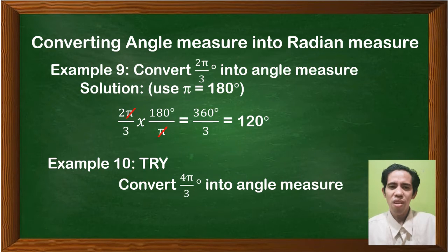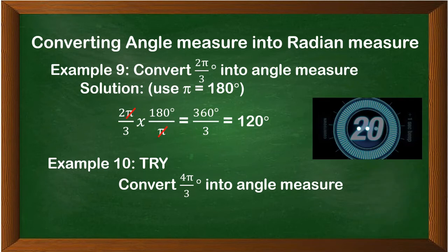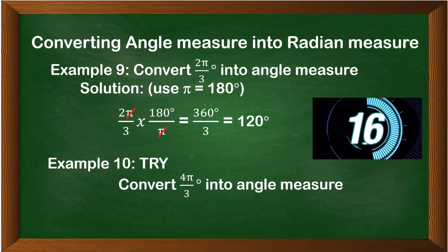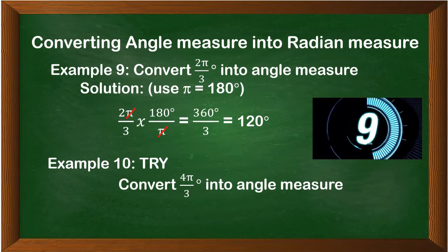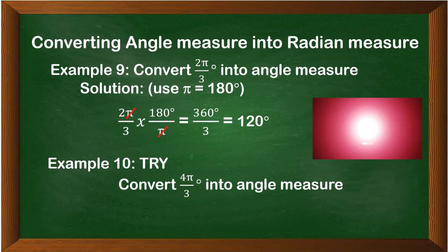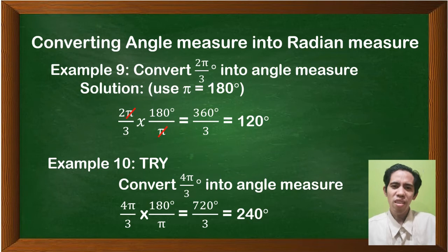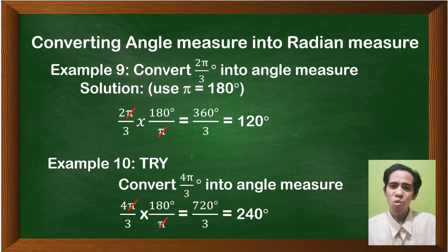Now it's your turn. Convert 4π/3 into angle measure — answer this in 20 seconds. Let's check: 4π/3 times 180 degrees over π equals 720 degrees over 3. 720 degrees divided by 3 is 240 degrees. Good — you're improving.